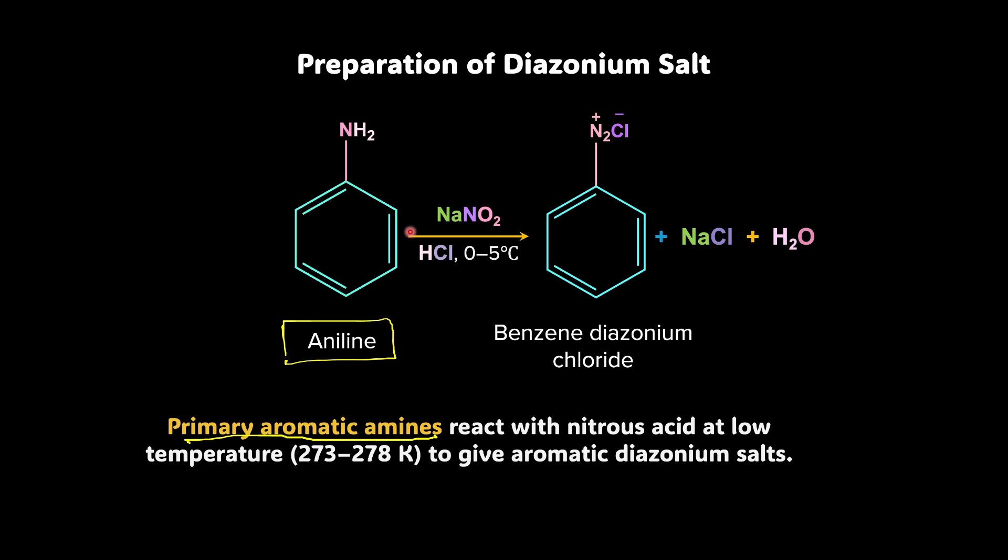So you can see that NaNO2 plus HCl will combine together to form HONO, which we can write as HNO2. And this is nothing but nitrous acid. So, nitrous acid is produced from this reacting mixture of NaNO2 and HCl. 0 to 5 degrees Celsius is maintained because this species which is formed, benzene diazonium chloride or BDC, is very unstable.